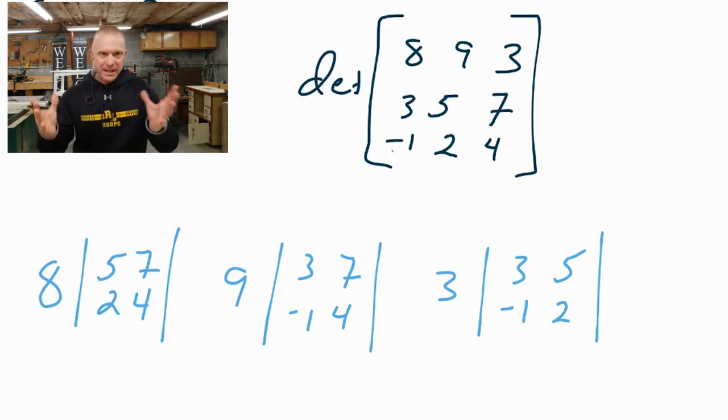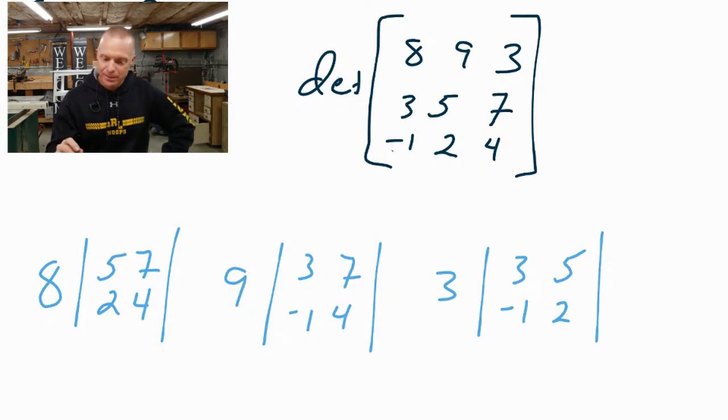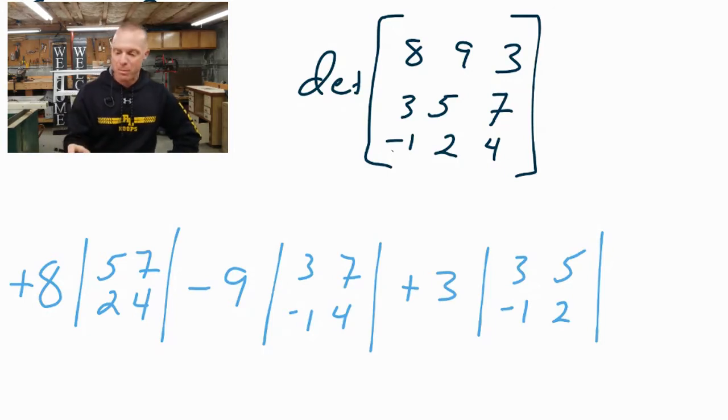Now, right now, it kind of looks like I got three separate problems just sort of floating around. It turns out that these three problems, these three matrices get connected with some plus and minus signs. So the first one is going to be a plus sign. Next one's going to be a minus sign. And the last one, that's right, it's going to be a plus sign. Because we went across the first row, we always will follow the pattern plus, minus, plus.